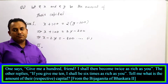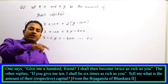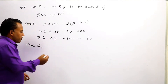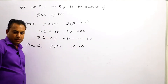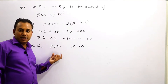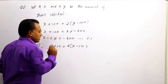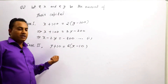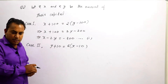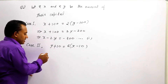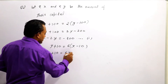Now the second friend replies: if you give me 10 rupees, the amount I will have will be 6 times the amount you will have. So y receives 10 rupees, meaning x loses 10 rupees. The condition says y + 10 = 6(x - 10). Solving this gives: y + 10 = 6x - 60.